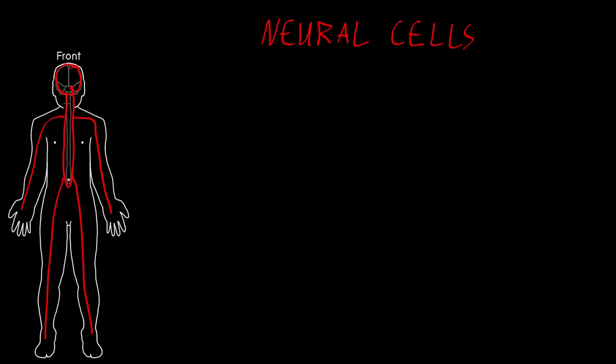Neural cells are divided into two big groups. The first big group of neural cells are called neurons. And the other big group of neural cells are called glia, or glial cells, or sometimes neuroglia.